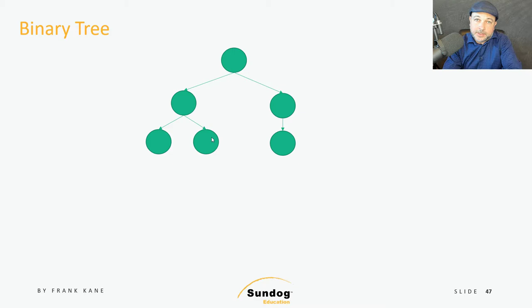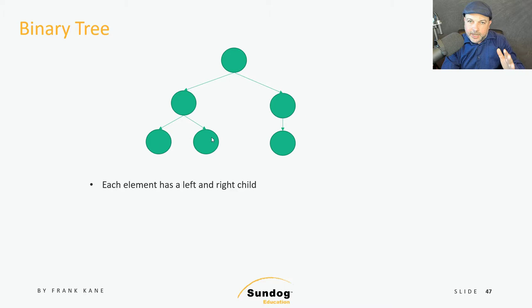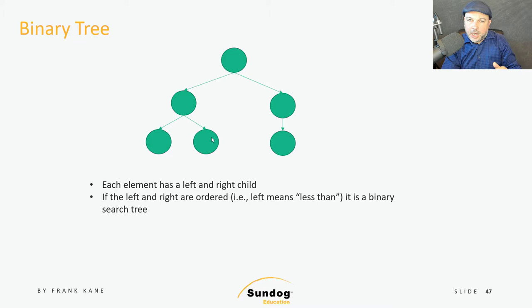Next let's talk about binary trees and binary search trees in particular. This is a sample of what one might look like. So instead of having a next and a previous pointer pointing to the next and previous things in a list, a tree structure means that every element instead has a left and a right child pointer. So we have the ability to work our way down through this tree, looking at the left and right children of each node as we work our way down.